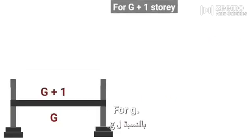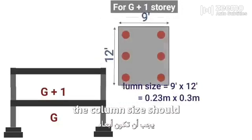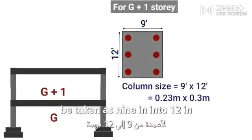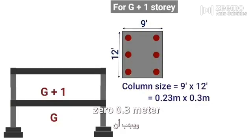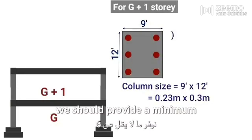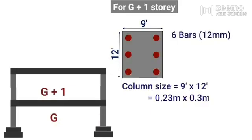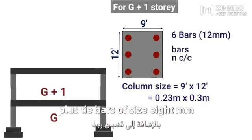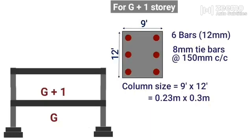For G plus 1 storey, the column size should be taken as 9 inch x 12 inch or 0.23m x 0.3m. We should provide a minimum of 6 steel bars of minimum diameter 12mm, plus tie bars of size 8mm spaced at 150mm center to center.